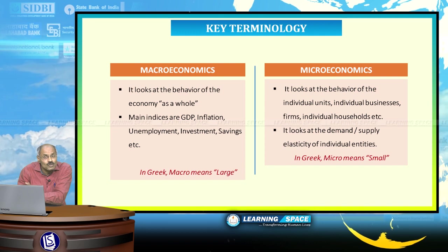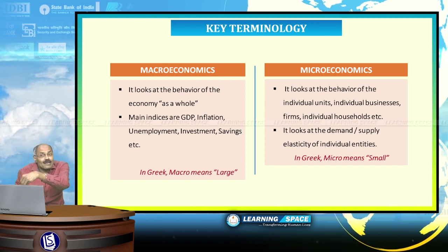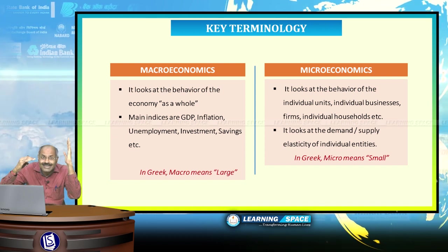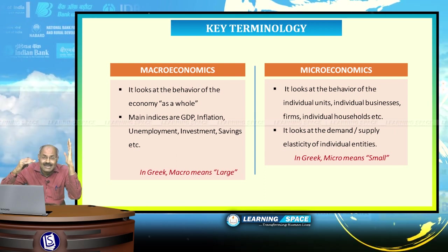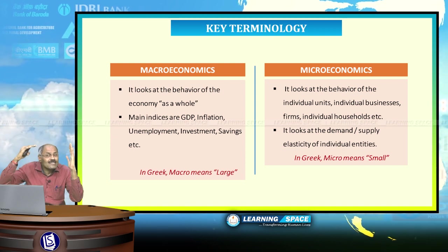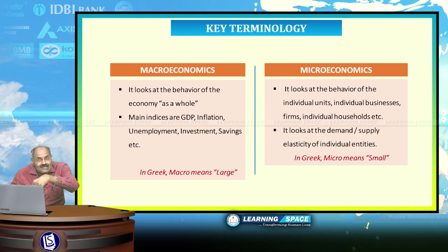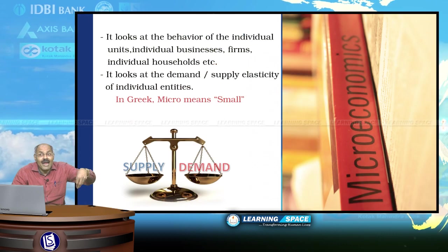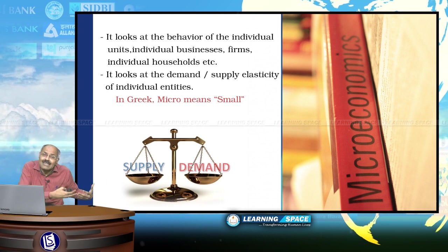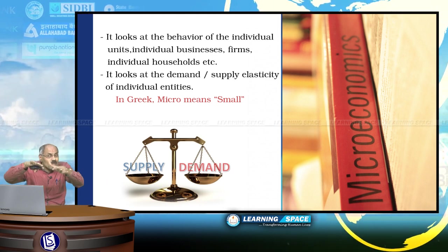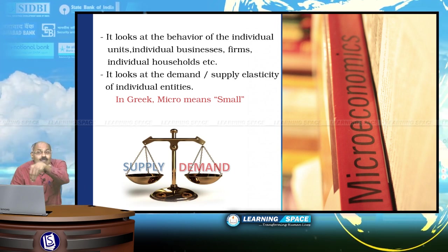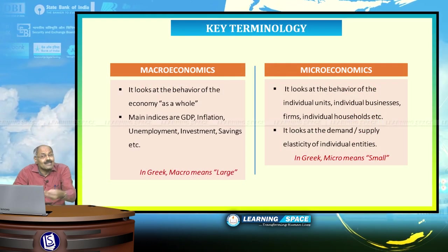Microeconomics looks at demand and supply of individual items — demand-supply elasticity. For example, if the cost of onions increases, consumption may reduce somewhat. If the cost of pulses increases, consumption may reduce. But if the cost of rice or wheat increases, consumption may not reduce much because it is the staple food of Indians. For non-essential items, if cost increases people may reduce expenditure. This demand-supply elasticity of individual businesses is microeconomics — it looks at small entities.